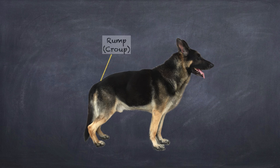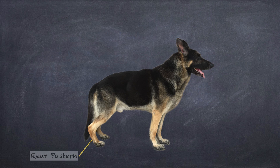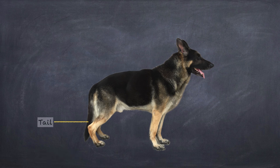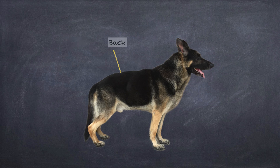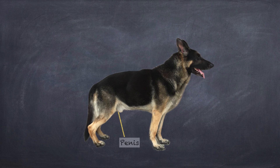Tail set. Rump or croup. Rear pastern. Tail. Loin. Back. Penis. Butt hole.